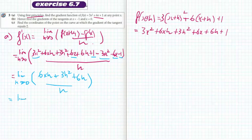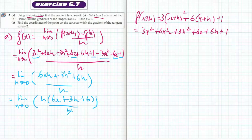That equals the limit as h approaches 0 of h outside of 6x plus 3h plus 6, all over h. The h's cancel. I can now let h go to 0, so it equals 6x plus 6. That's the gradient function of f of x using first principles.